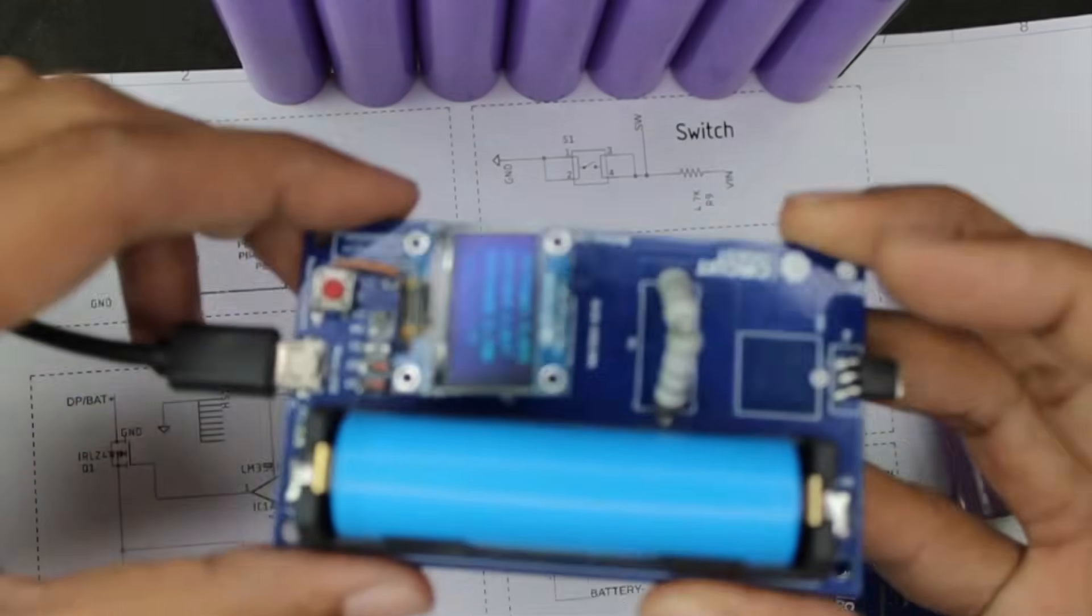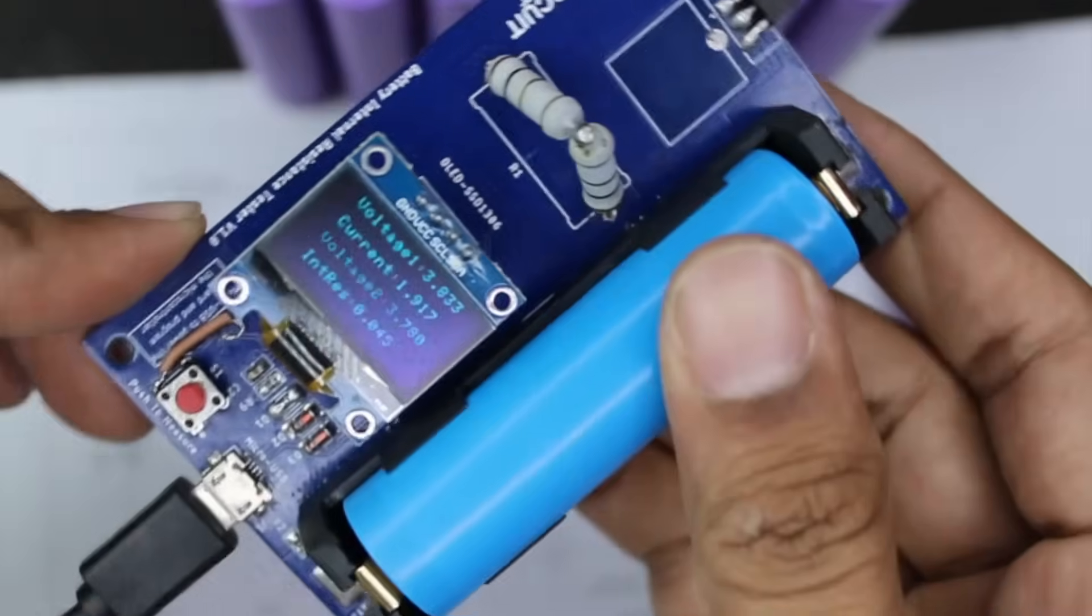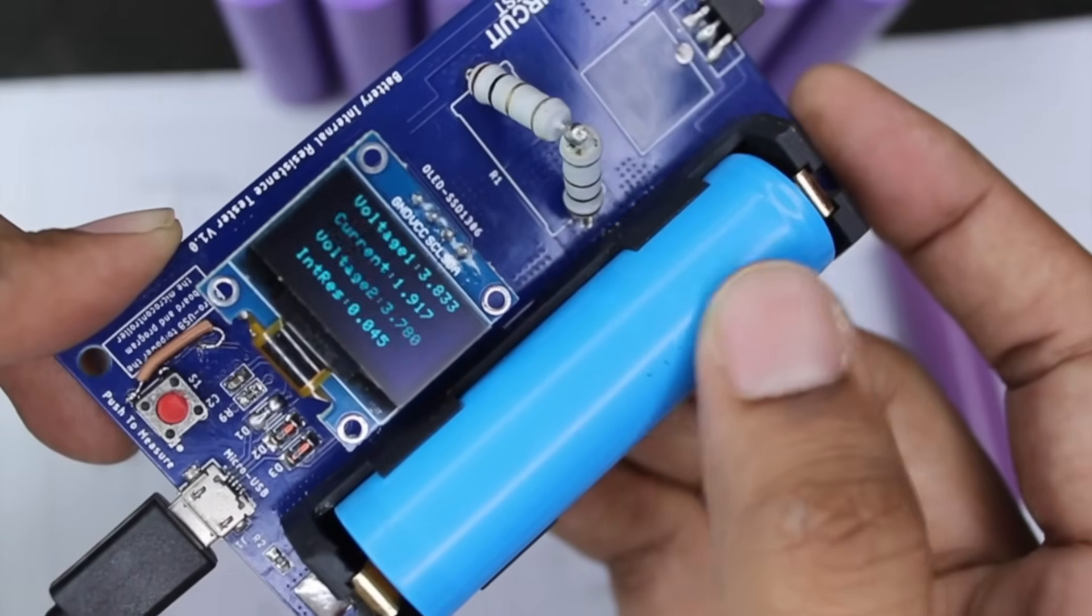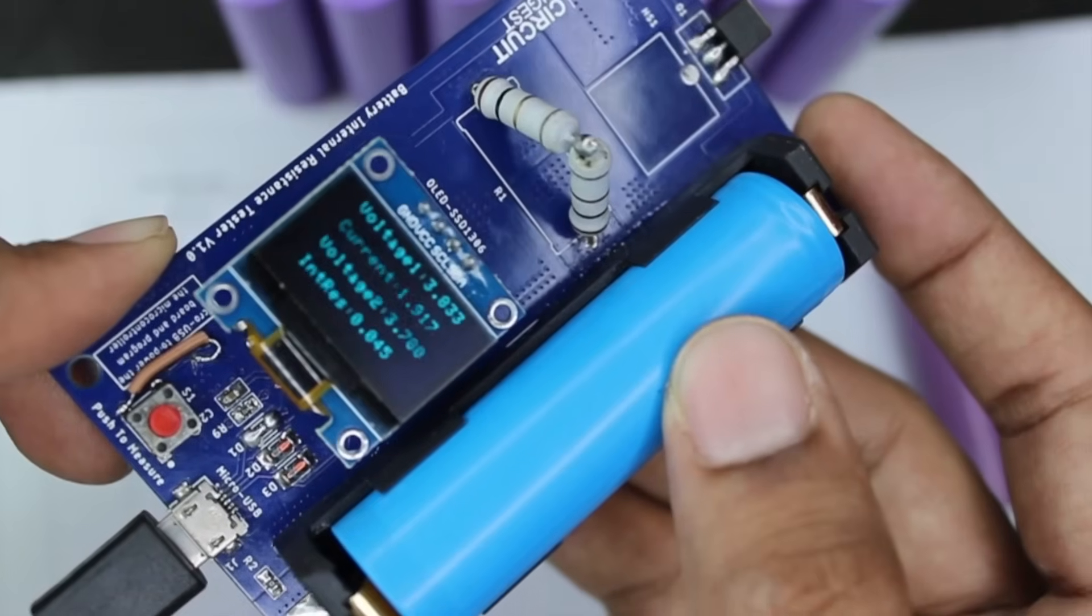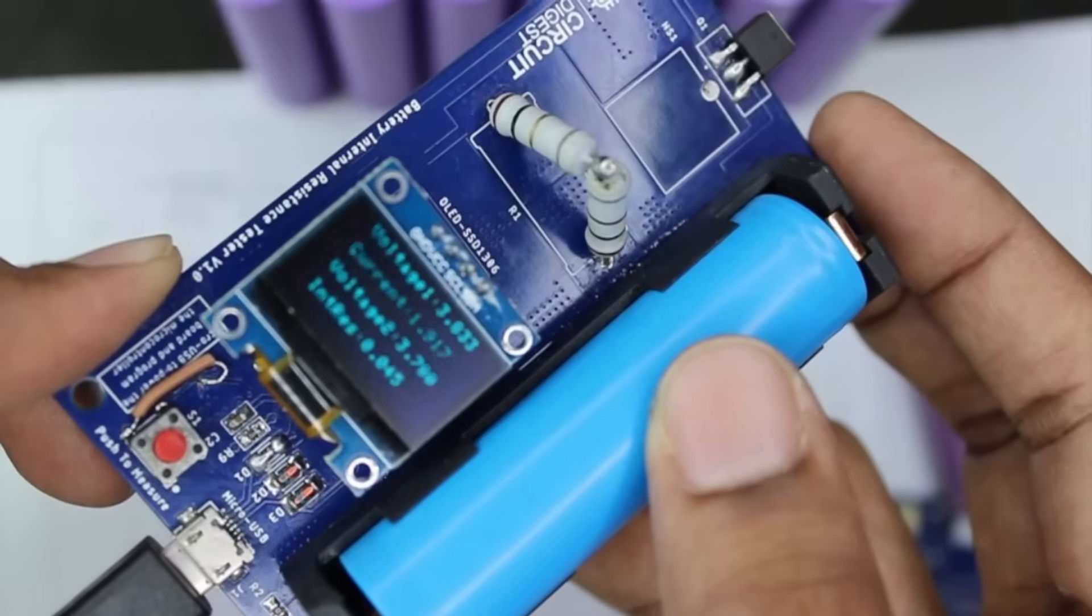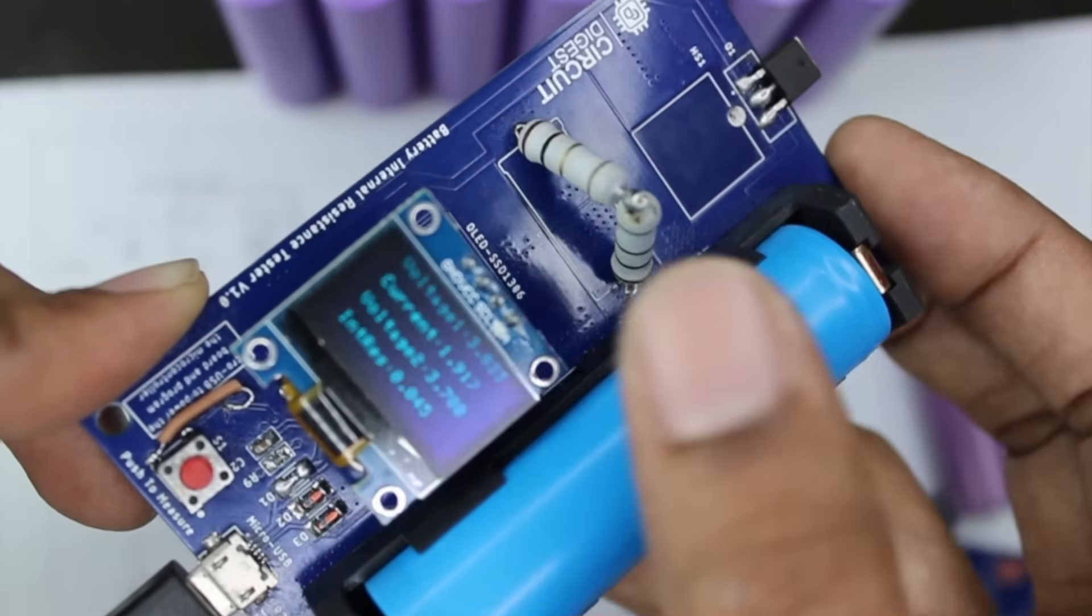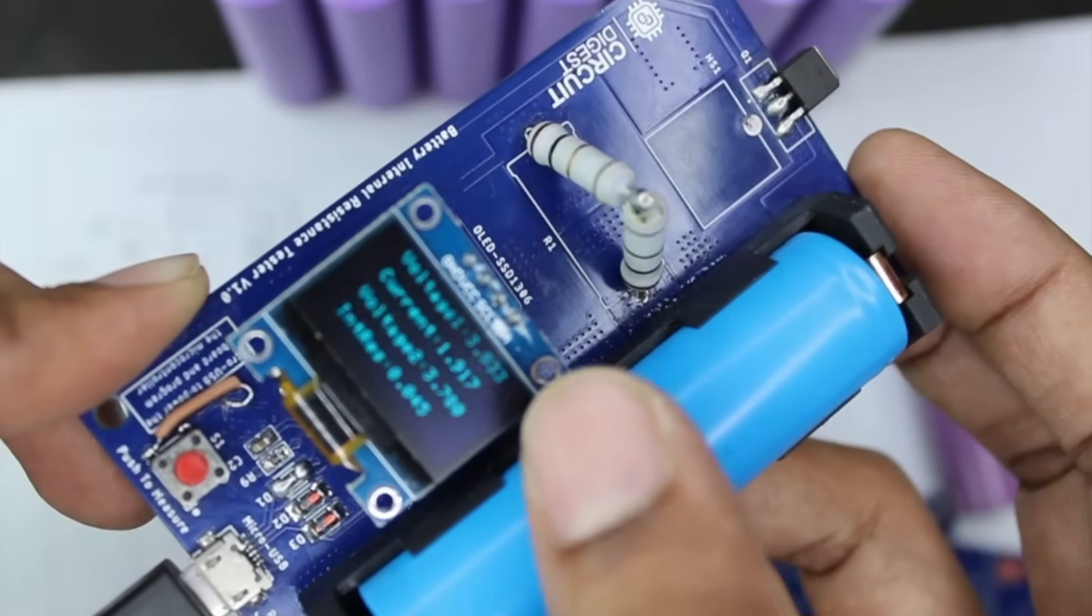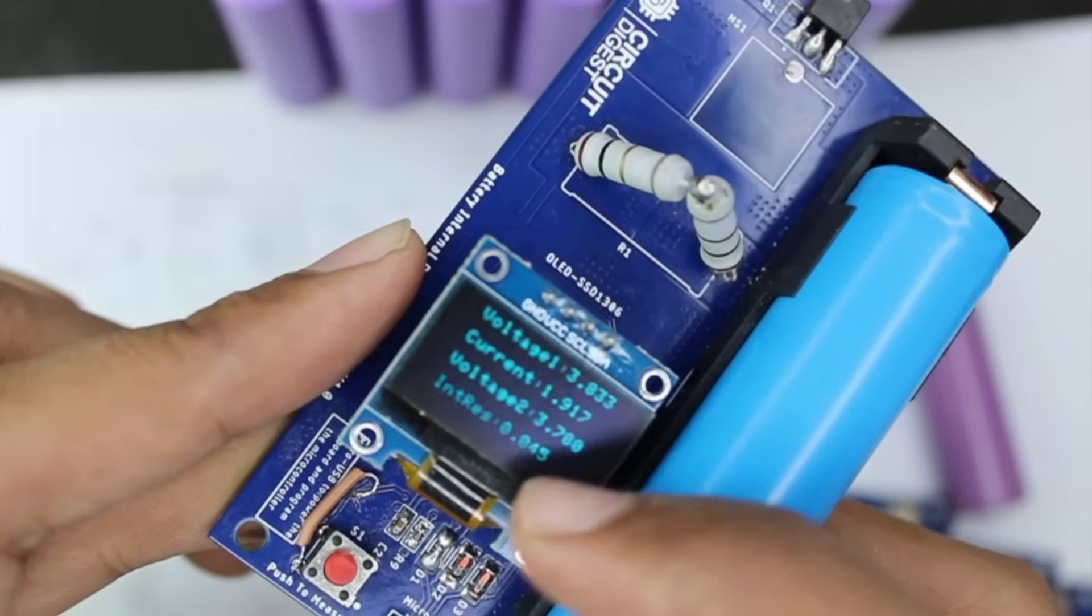Let me show you how this works. Our board measures four parameters in total. The first is the voltage, which is the open circuit voltage of this battery at 3.833 volts. Then the current flowing through the load resistance, which is 1.917 amps.